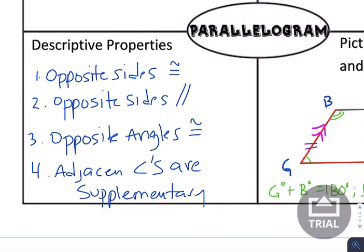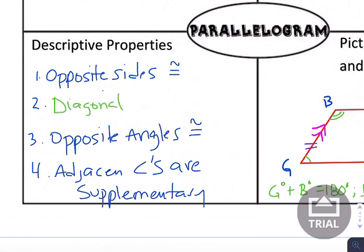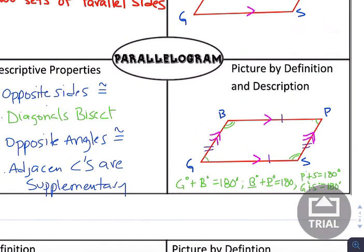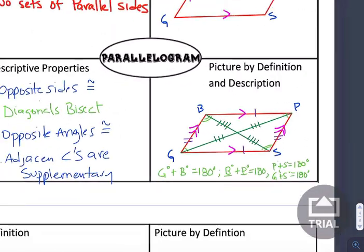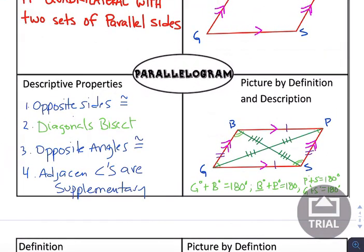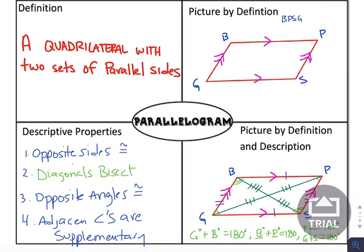Let me make an addendum here — I just realized I wrote 'opposite sides are parallel,' but that's actually part of the definition. What I meant to write here is that diagonals bisect one another. Bisect means to cut in half. Another property that turns out to be true is if I take these diagonals on a parallelogram, they actually cut each other in half. So those are all the properties that turn out to be true about a parallelogram.